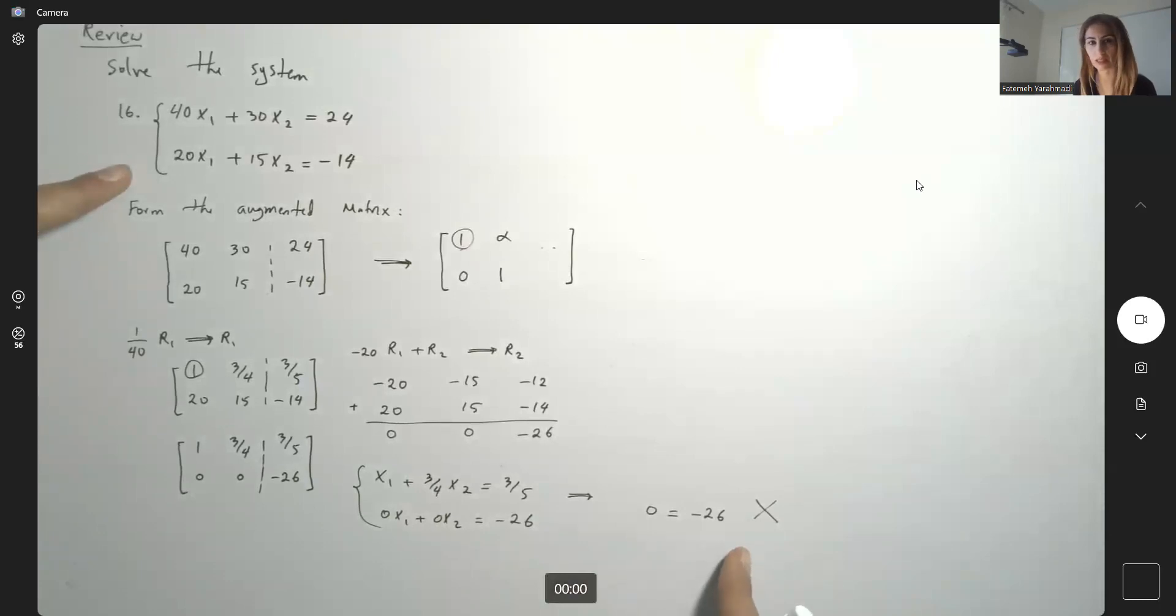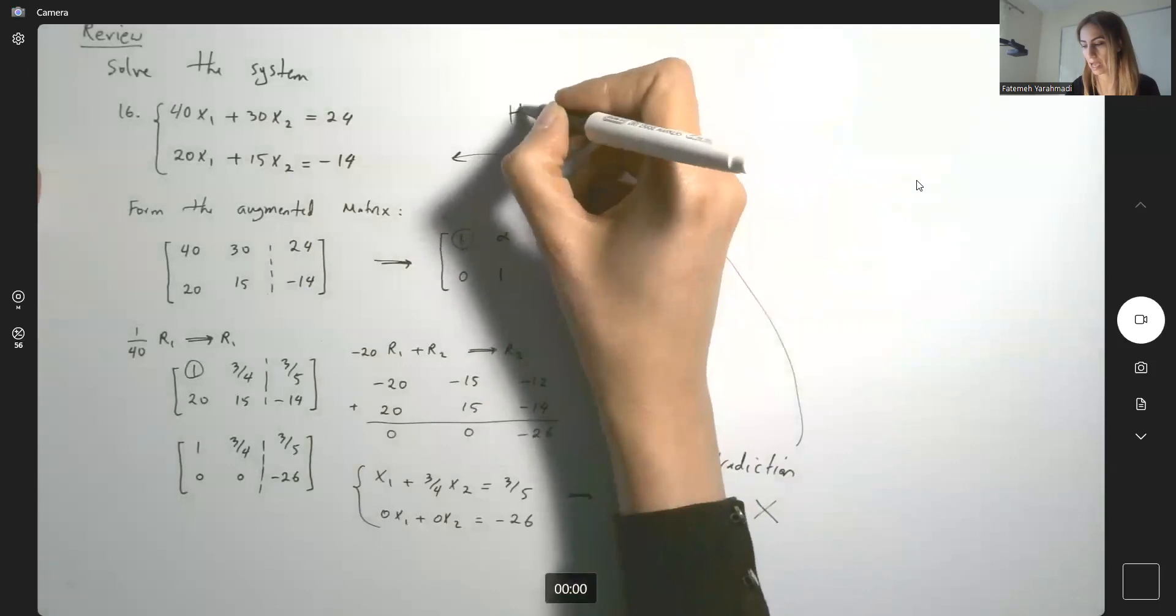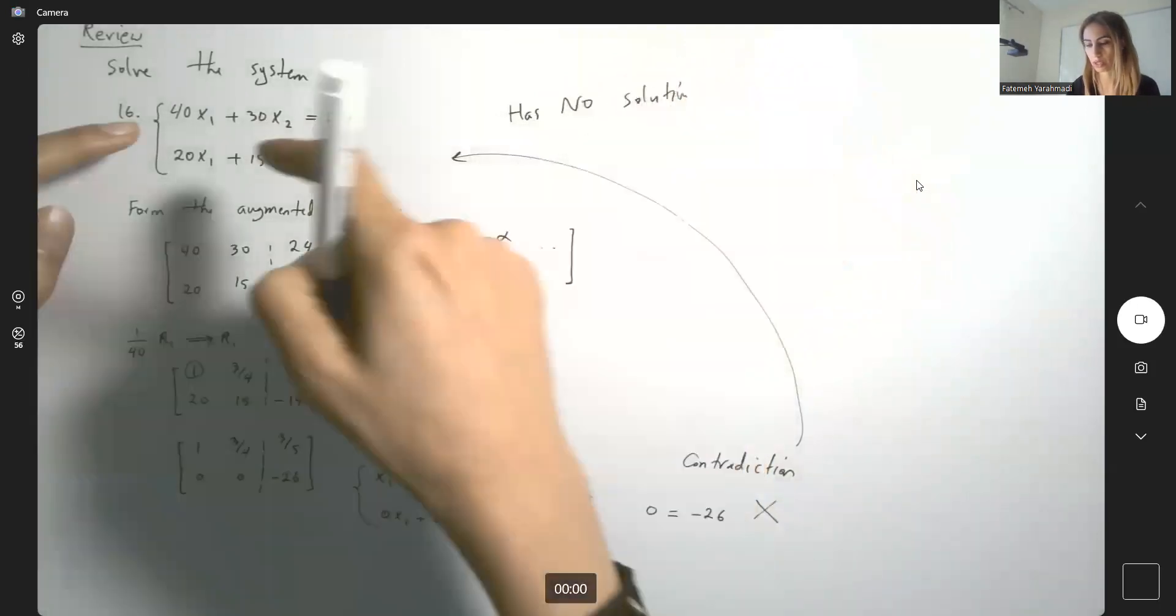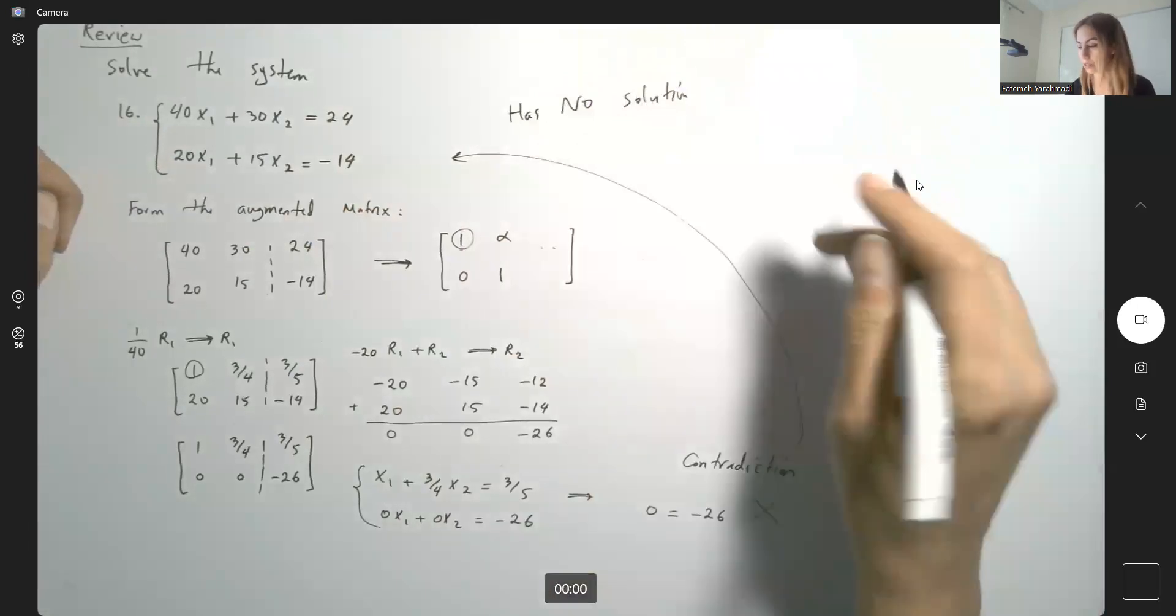So, what's the meaning of that? It means that this system, here we have contradiction, doesn't make sense. This system has no solution. These two lines never intersect.